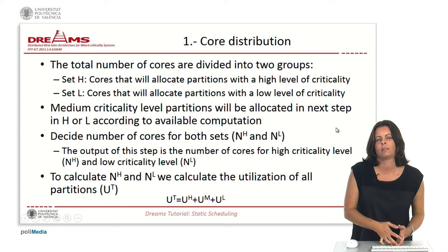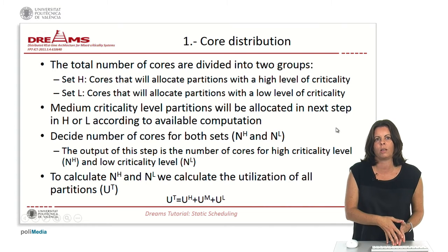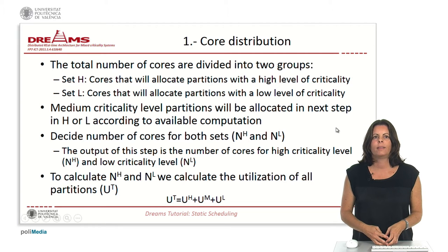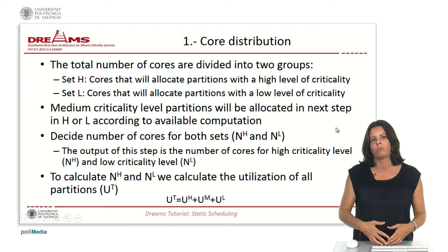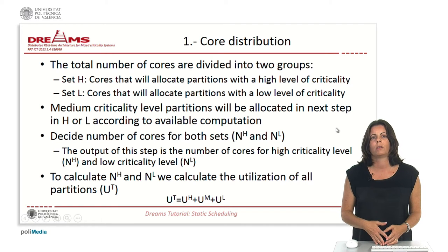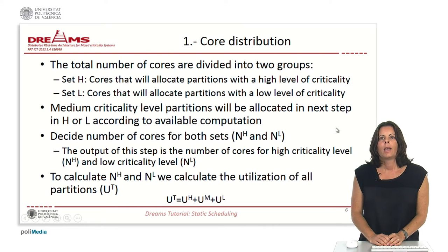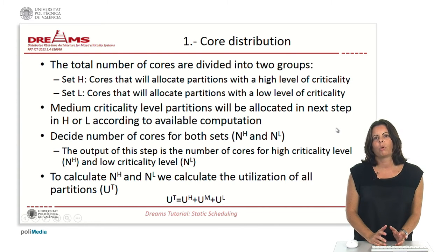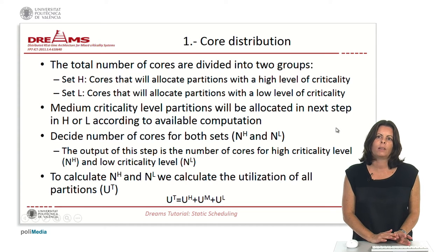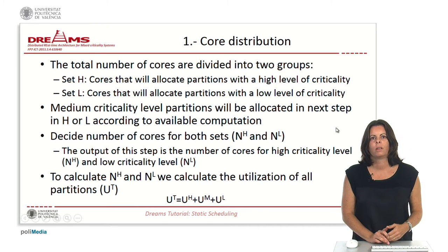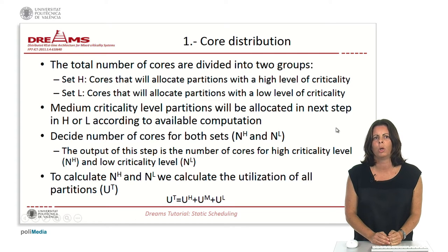In the first step we have to determine the total number of cores of the system. If the number of cores is fixed by the computing platform, we at least have to be sure that the number of cores will be enough to allocate all the partitions. If we have freedom to choose the number of cores, we will divide them into two groups depending on the criticality levels. We will suppose that we have three criticality levels: high, medium, and low.